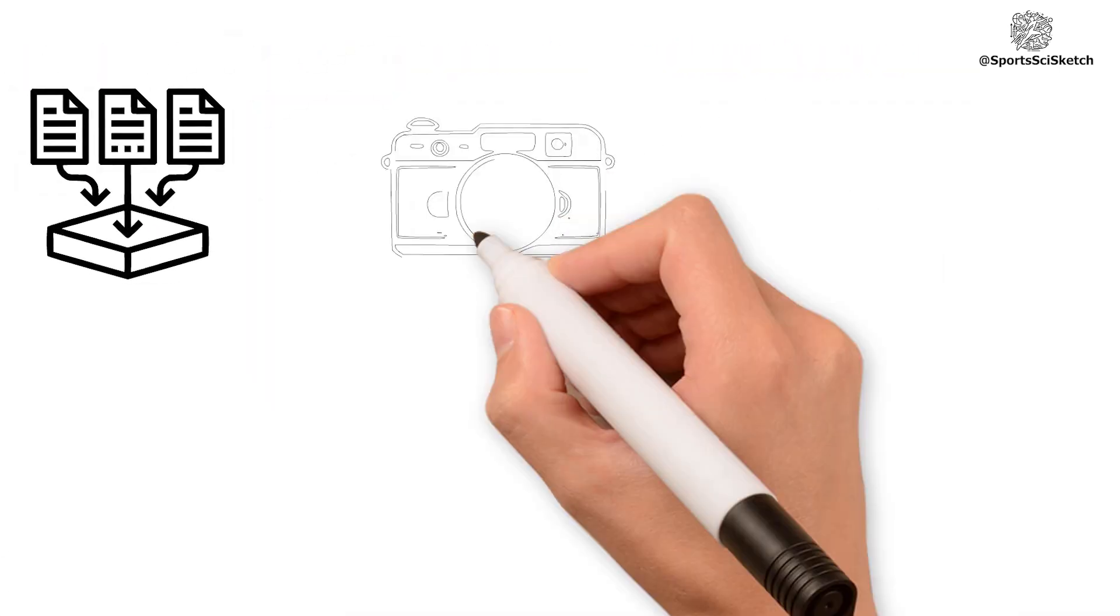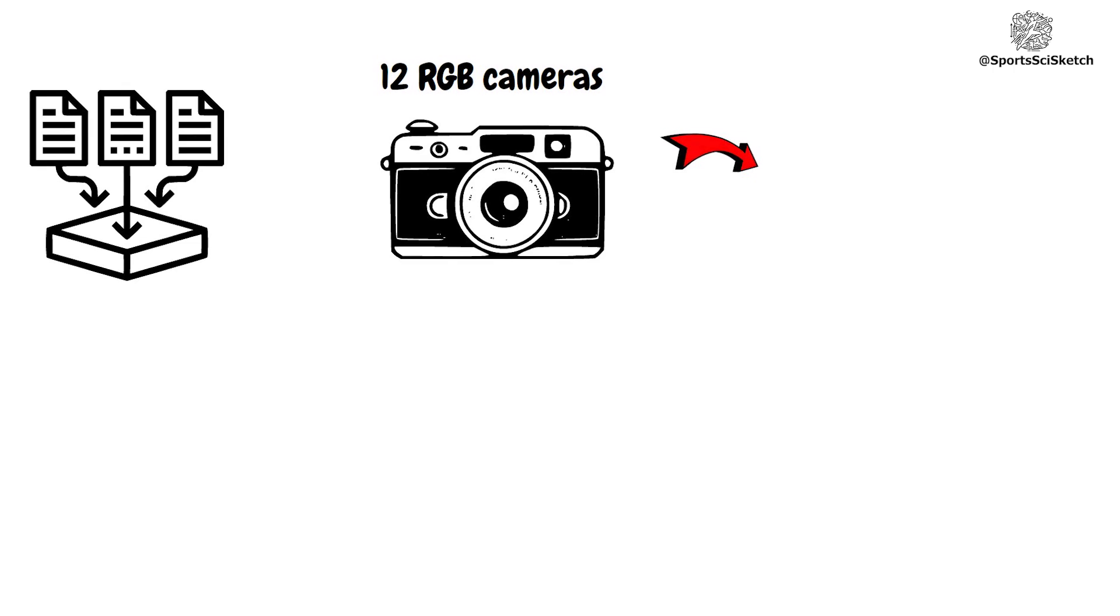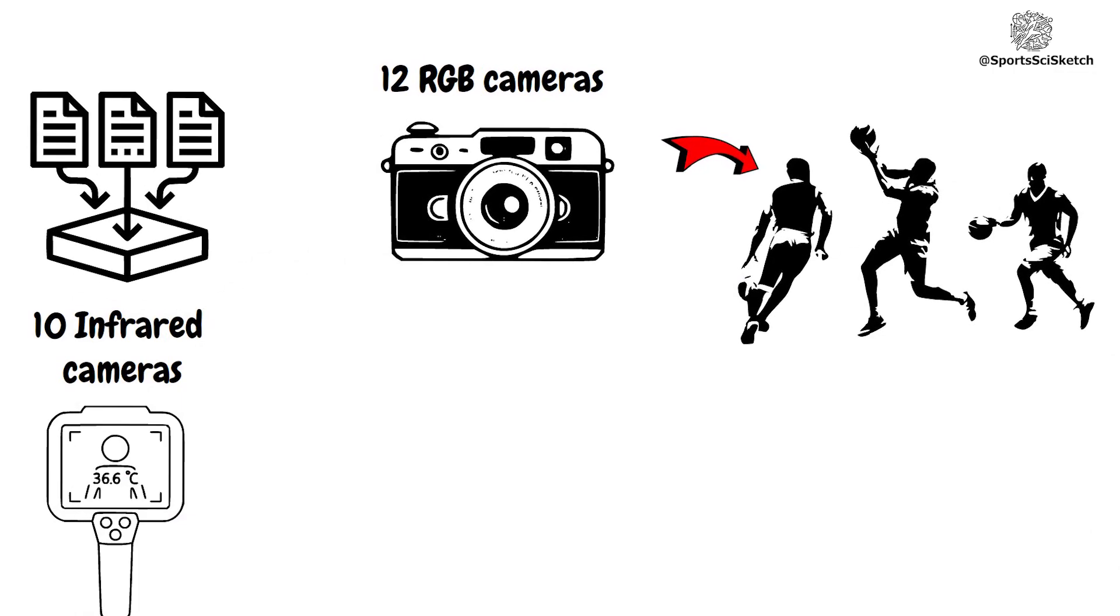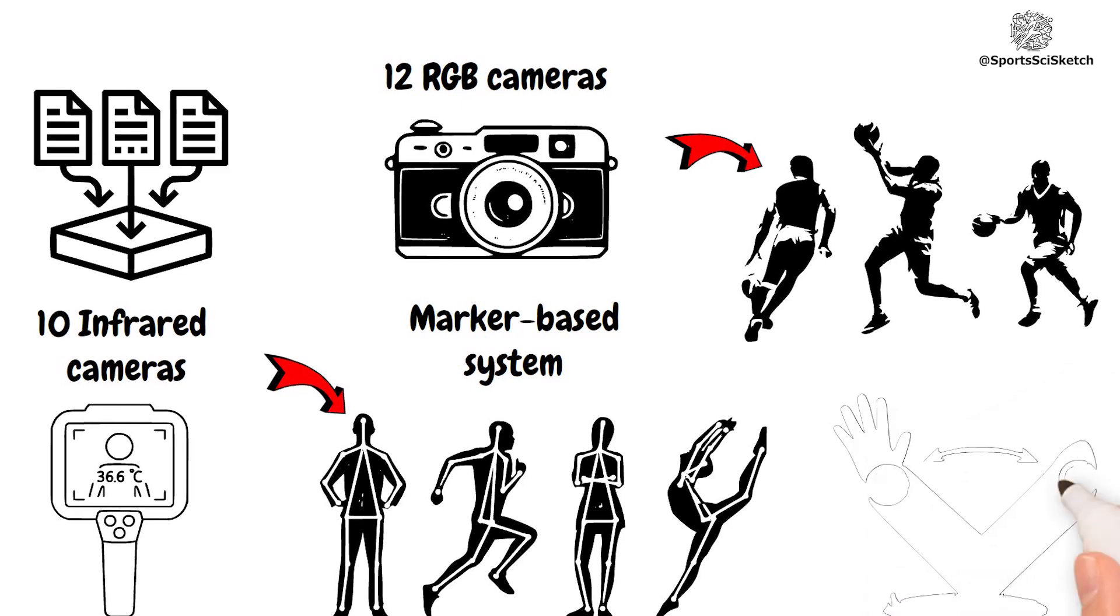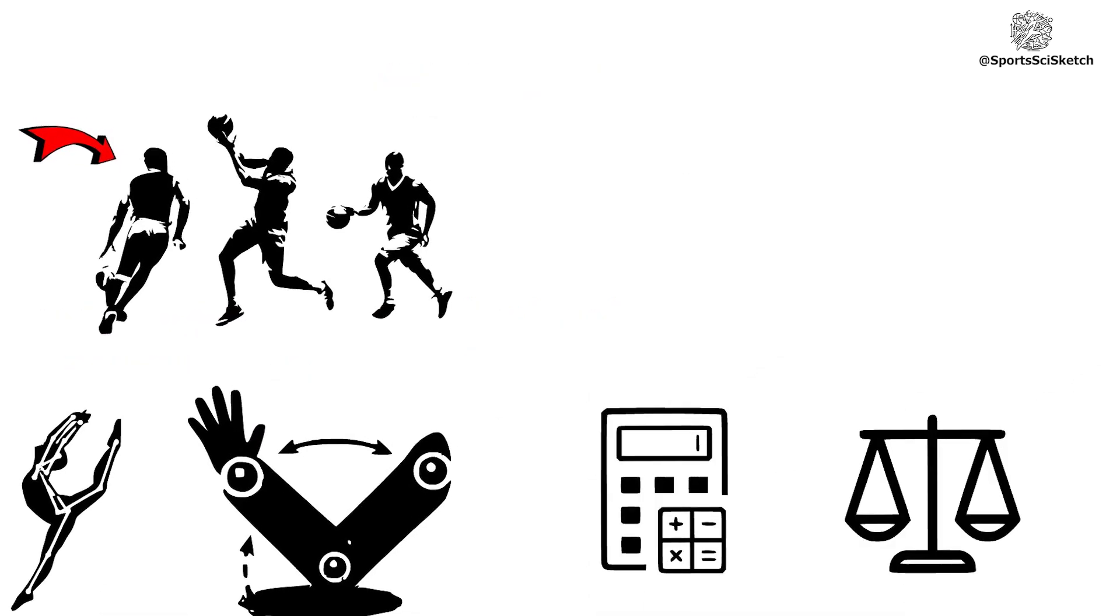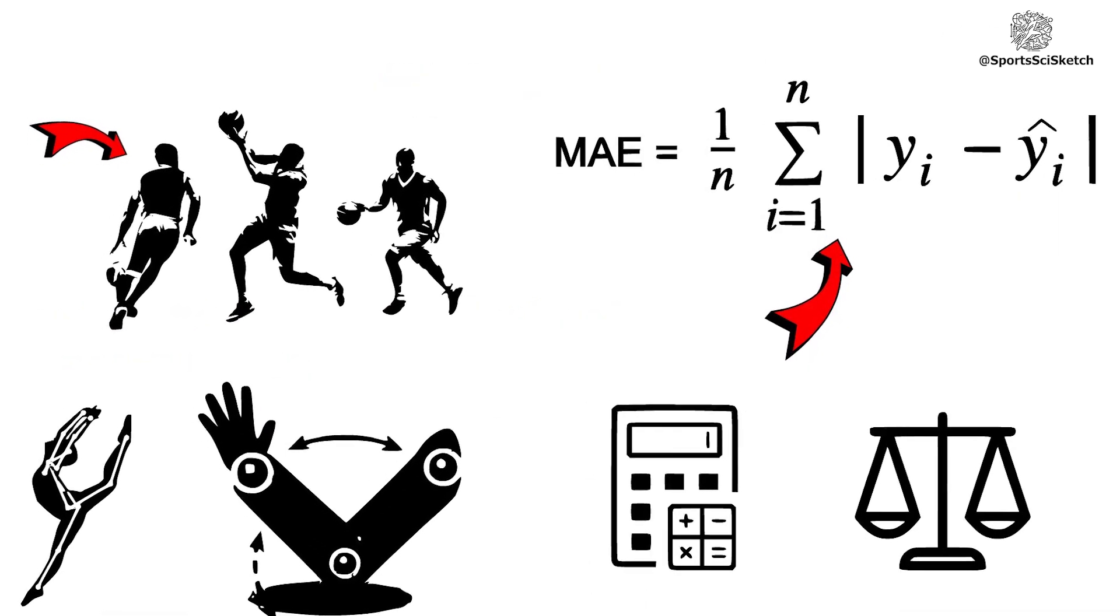Data was collected using 12 RGB cameras for pose estimation and 10 infrared cameras for the marker-based system. The joint angles were calculated and compared using mean absolute error.